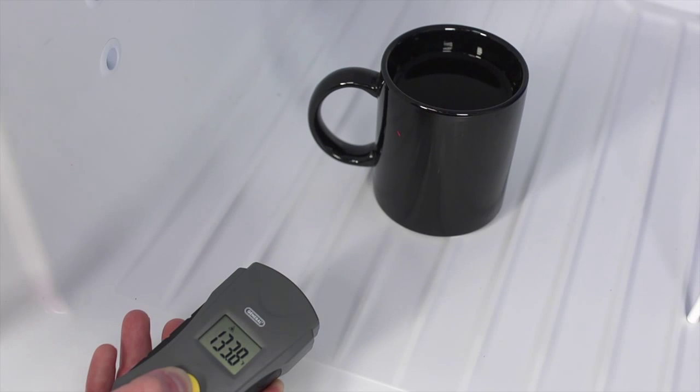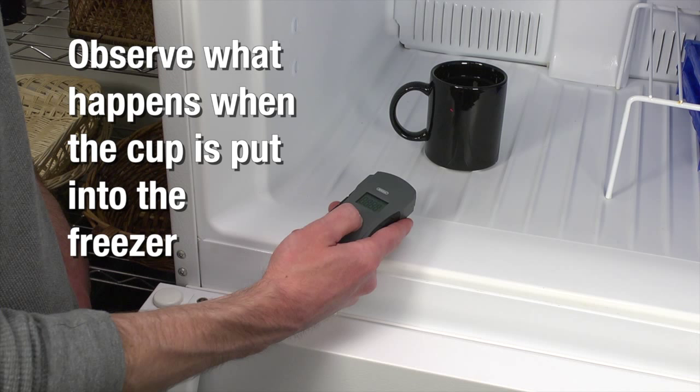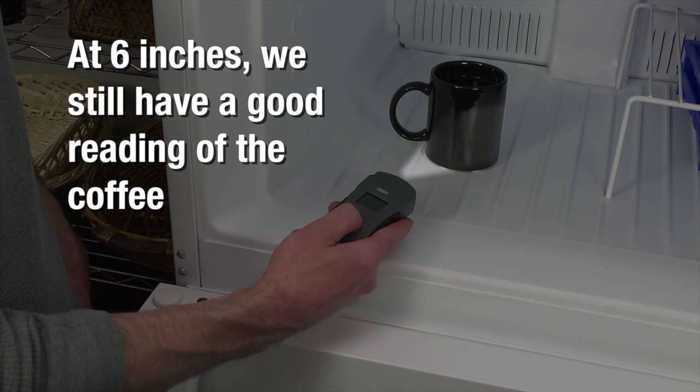Next, put the cup into the freezer and measure again. Hold the unit close to the cup and observe what happens when the measurement overlaps the target area. At 6 inches, we still have a good reading of the coffee.